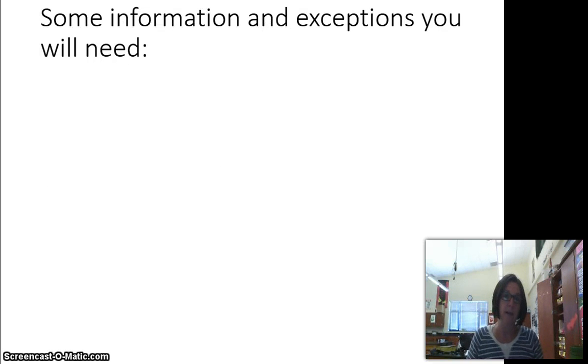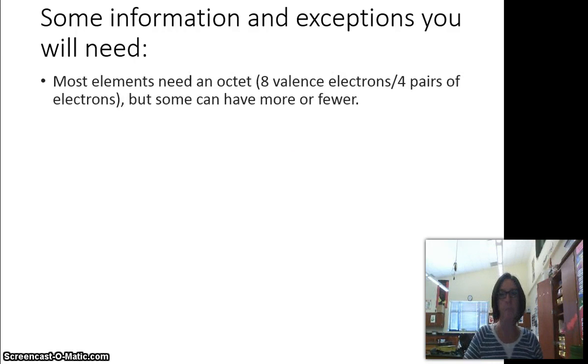So on the piece of paper that I gave you, it has some information and exceptions that you're going to need before you start making Lewis structures. The first thing is that most elements that you're going to deal with need an octet. Octet means that it needs eight valence electrons, and in Lewis structures, we break all the electrons into pairs. That means most elements are going to want four pairs of electrons. But there are exceptions. Some can have more, and some can have fewer.